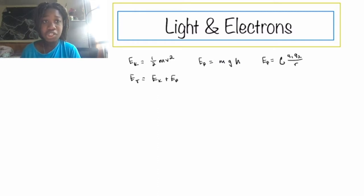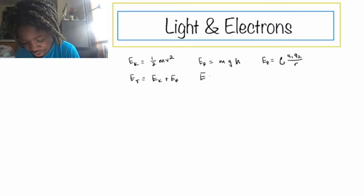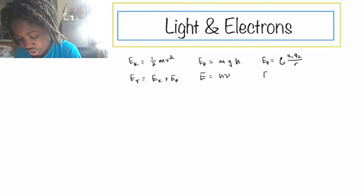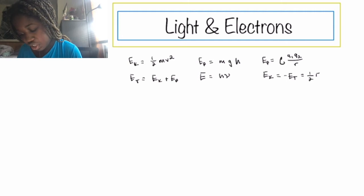We have the energy of a photon, which is E equals h nu. And we have our virial theorem, which is Ek equals negative Et, which also equals one-half Ep.